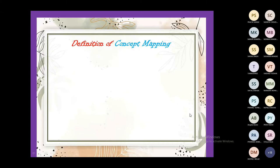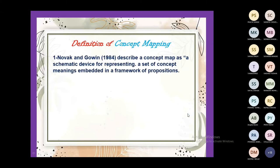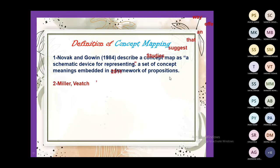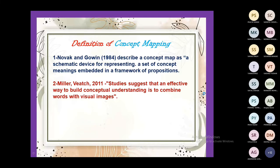What is the definition of concept map? According to Novak and Gowin, they described a concept map as a schematic device for representing a set of concepts embedded in a framework of propositions — a very important framework of propositions. The second definition, Miller and Wiley in 2011, suggest that an effective way to build conceptual understanding is to combine words with visual images. Afterwards, visual images were introduced alongside the word nodes.